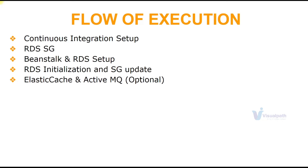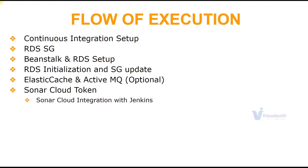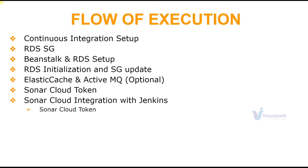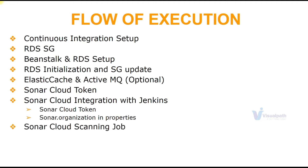Optionally, you can launch Elastic Cache and ActiveMQ at this stage. Then we go to SonarCloud, generate a token there, and integrate SonarCloud with the Jenkins server. In the previous Continuous Delivery on AWS project we integrated SonarCloud with CodeBuild; here we do the same integration but with Jenkins. When integrating, we put the SonarCloud token and one additional property — sonar.organization — in the SonarScanner job. Then we make changes to our SonarCloud scanning job so it uploads results to SonarCloud, and we test it.